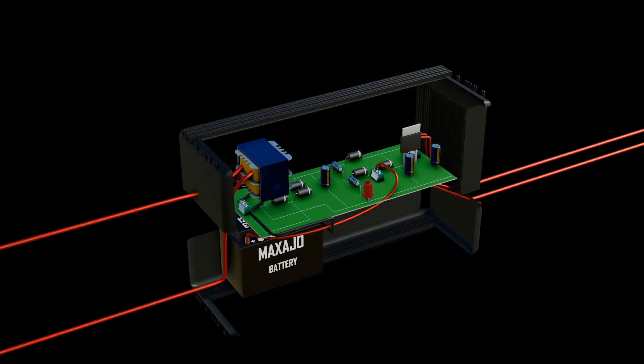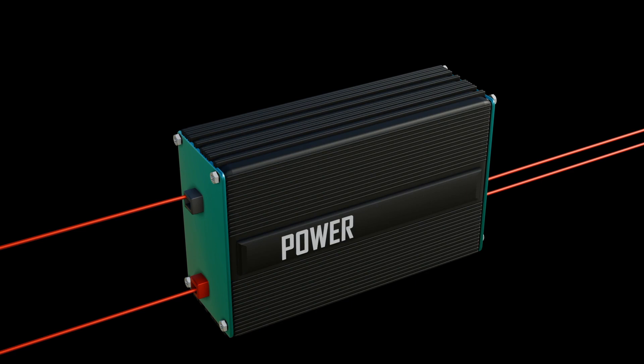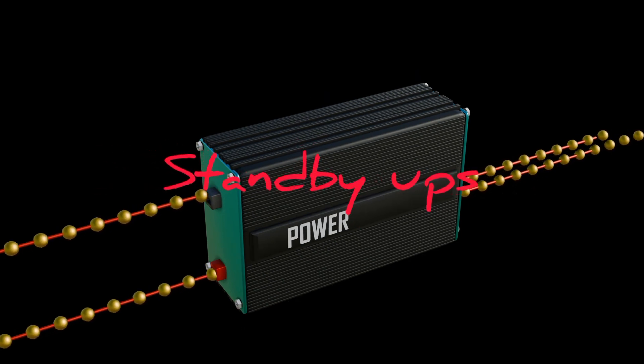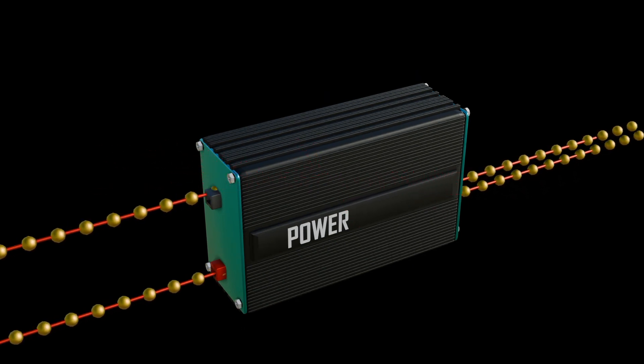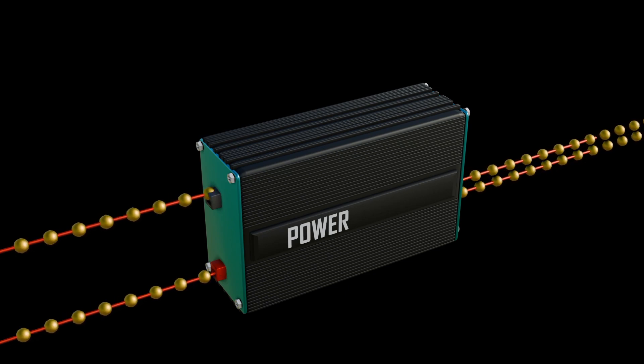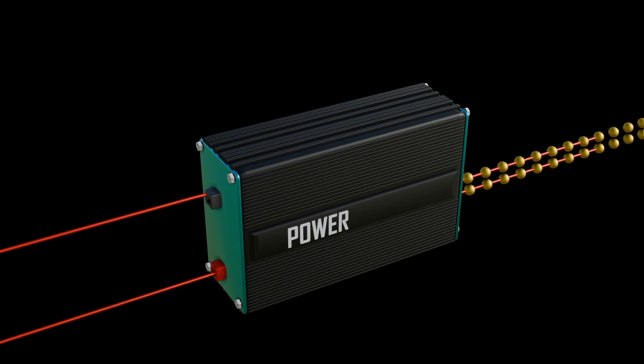Something to note is that this type of UPS is called standby UPS. The standby UPS runs the computer off of normal utility power until it detects a problem. At that point, it switches very quickly, about 5 milliseconds or less.